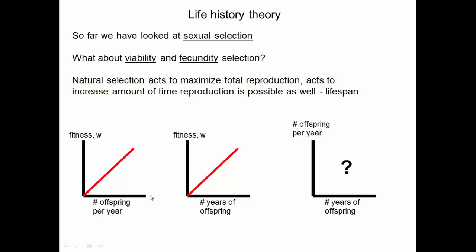We can imagine a plot where the number of offspring per year that an individual has is positively related to their fitness. Fitness in evolutionary biology is often represented with a W, for Sewell Wright, who we talked about earlier in the course. So you have a positive relationship between the number of offspring per year and fitness. And if an organism lives longer, they have more years of having offspring, so their fitness would go up.